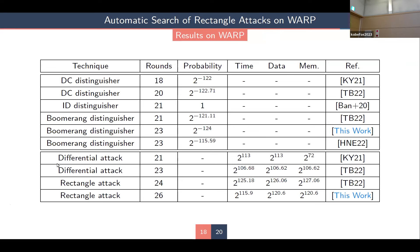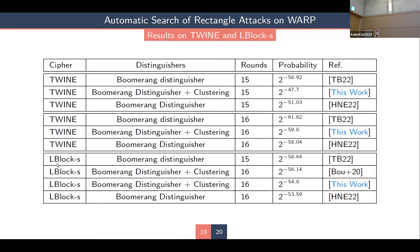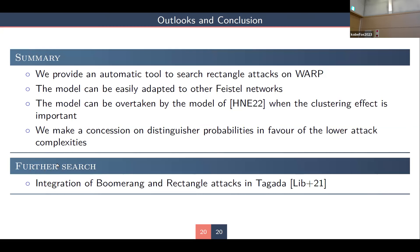We also computed a new rectangle attack on 26 rounds of WARP. We applied our model to TWINE and L-Block-S as well, finding results close to the state of the art. To conclude: we provide a new automatic tool to compute rectangle attacks; the model can be easily adapted to other Feistel networks; the model can be outperformed by Hadipour's model when the clustering effect is important; but even with a concession in distinguisher probability, we can obtain better attacks than by only optimizing the distinguisher probability.